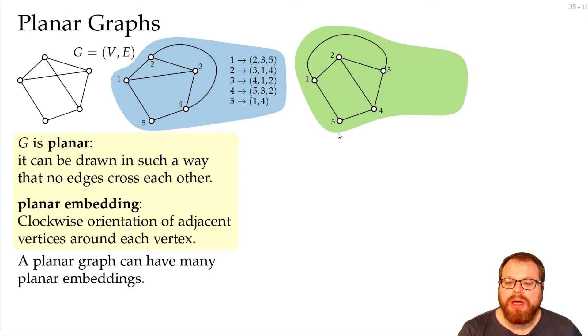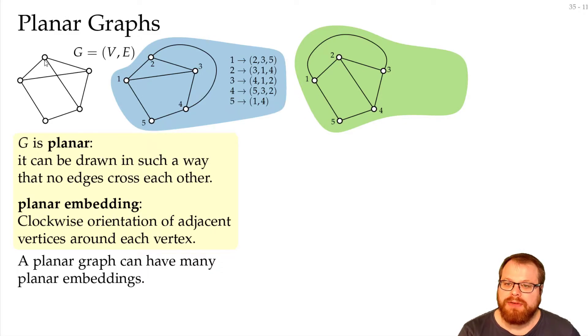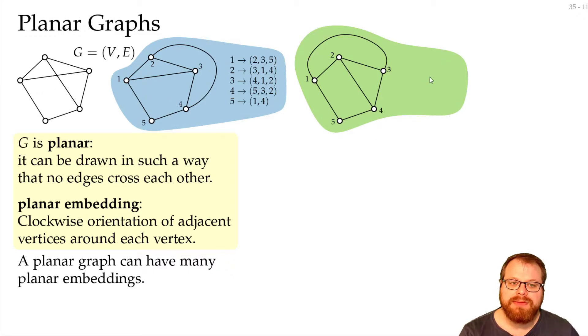A planar graph can have many different planar embeddings. Instead of rerouting this edge, I could have also rerouted that edge, and that gives me a different drawing with a different planar embedding.